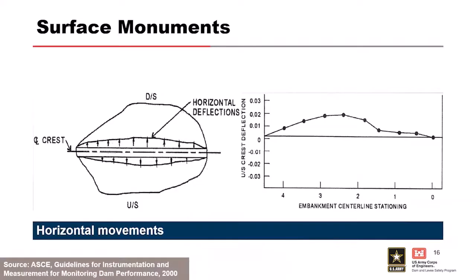Surface monuments can also measure deflection. This plot shows horizontal deflection from the dam centerline — there has been some degree of movement, possibly upstream or downstream, along positions on the embankment centerline station. This could also reveal a particular zone of interest where a section of embankment is deflecting in a certain direction, potentially indicating creep.